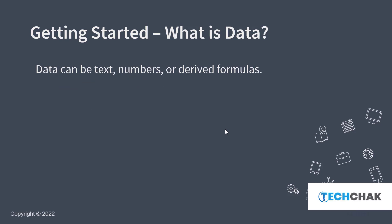Your data can be in a text format — for instance, your first name, the name of your state, the name of your country. These are all in text format. Secondly, your data can be in a number format, for instance, the salary, the age, etc. And also, your data can be derived from existing numbers or from an existing formula.